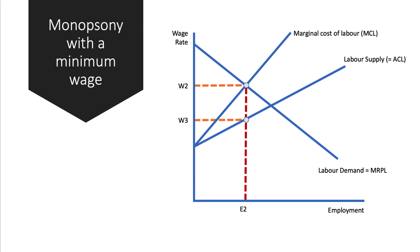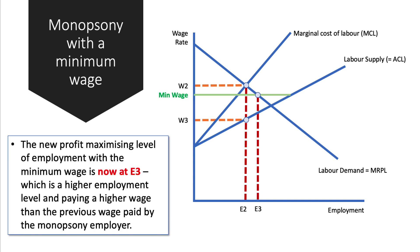How might monopsony be affected by a minimum wage? In our previous situation the wage paid is W3 and employment is E2. If we introduce a minimum wage set above the monopsony wage — shown here as a green line — employers cannot pay below that wage, and therefore it effectively becomes the marginal labour cost curve across that range of employment. That green line intersects with marginal revenue product at employment level E3. So the new profit-maximising employment level is E3, which is a higher employment level paying a higher wage than previously. Introducing a minimum wage with a monopsonist can actually increase employment and increase wages, which goes against the traditional theory.